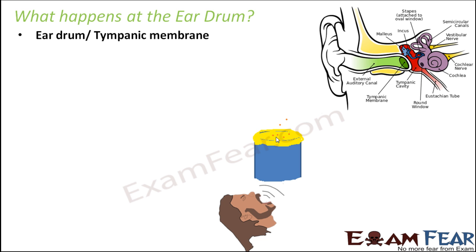Now you keep a few grain seeds here — small grains on this membrane. This side is open. Now you speak something on this side and what happens? The sound waves reach this membrane. This membrane, being a stretched membrane, starts vibrating. And how do you know it is vibrating? Because these grains start jumping — they also start vibrating along with the membrane. This shows that when sound waves reach a stretched membrane, the stretched membrane starts vibrating.